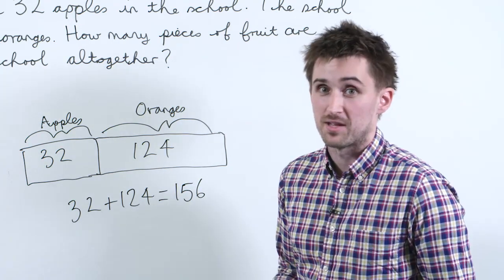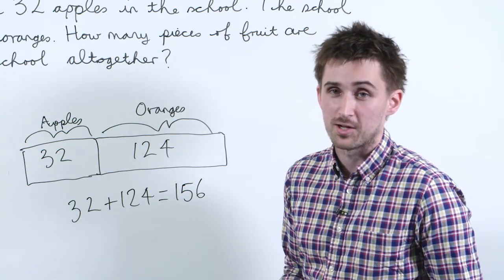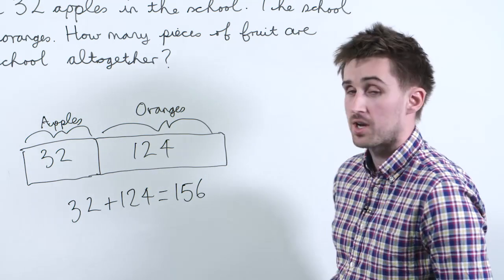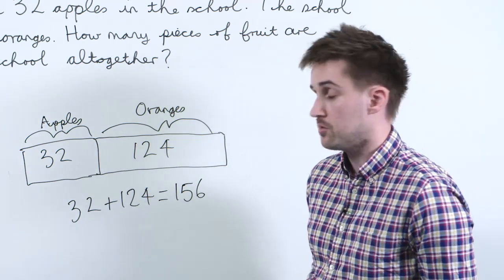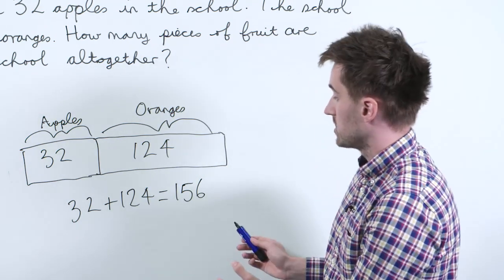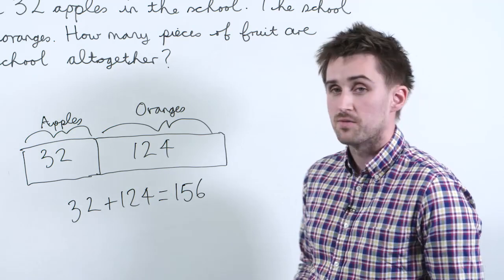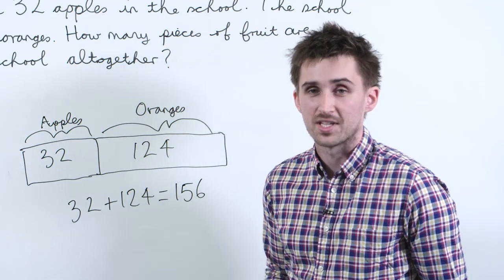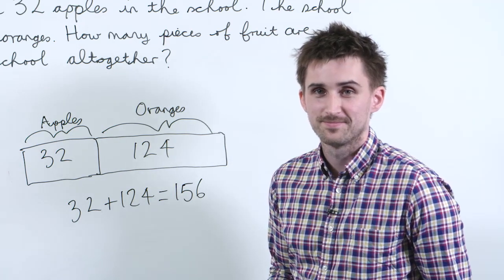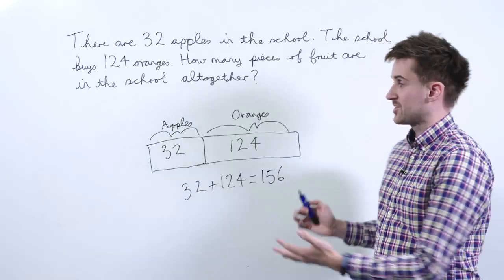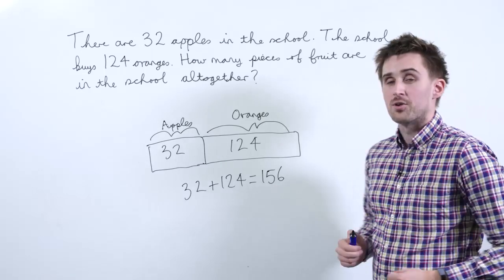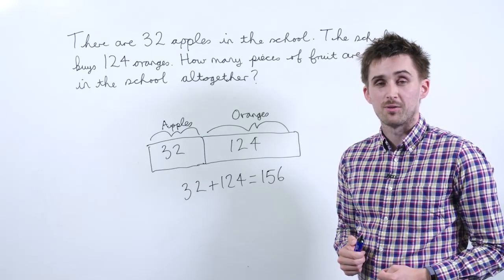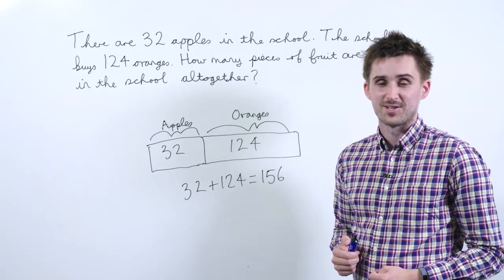So we add 32 to 124, and this means that we've got 156 pieces of fruit altogether. And that's how you use a bar model to help solve a word problem involving addition.